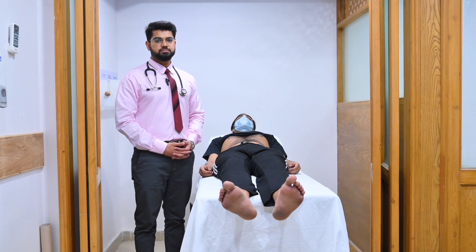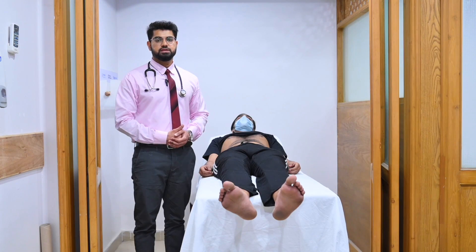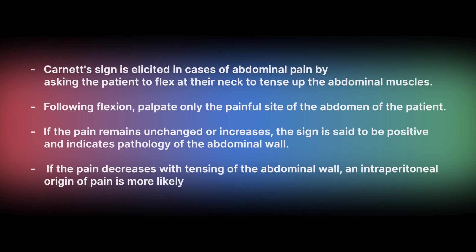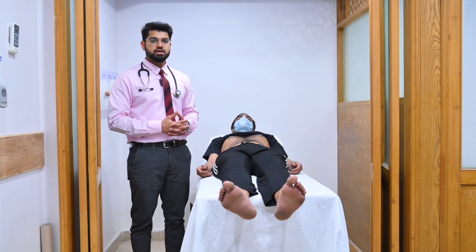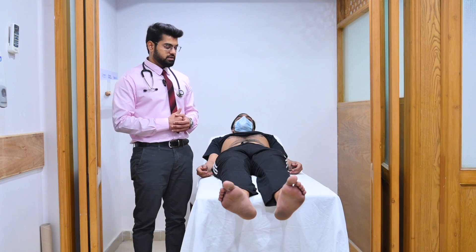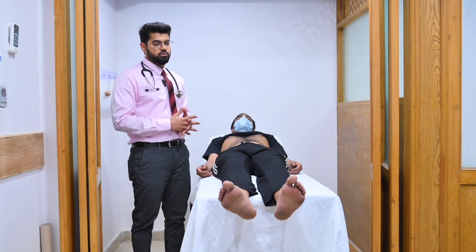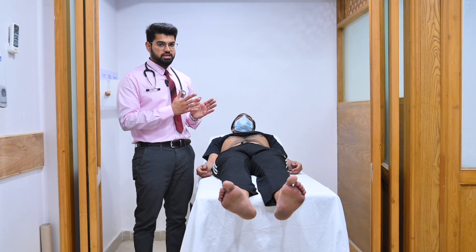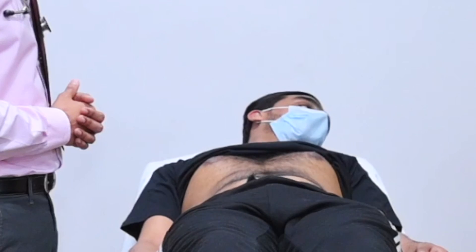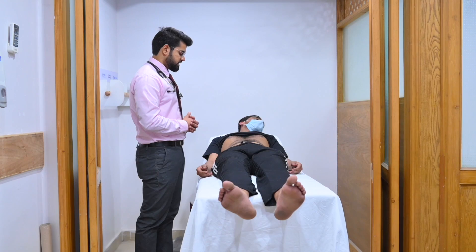Two special manoeuvres can be performed on inspection to evaluate for any lumps or swellings. The first is called Carnett's manoeuvre. The second is called the cough test. During the cough test, we ask the patient to cough and observe for any visible bulges or swelling. This indicates a fascial defect through which a peritoneal outpouching is coming through — this is called a hernia. We can see that in the abdomen as well as in the inguinoscrotal region. Can you look to that side and cough for me? Can you cough again? Thank you.